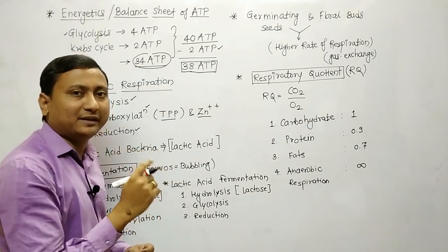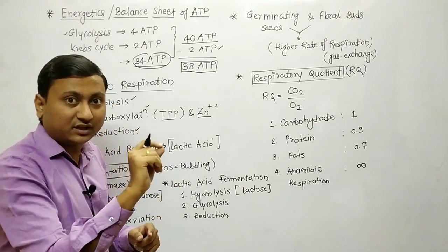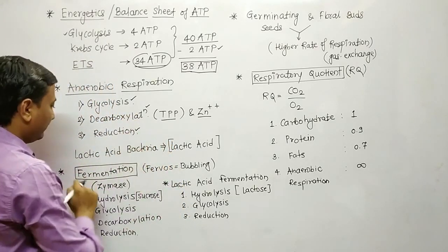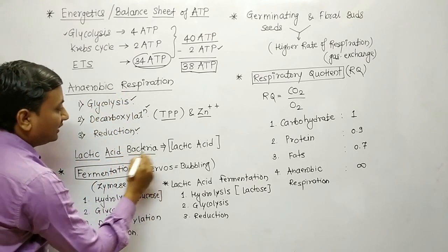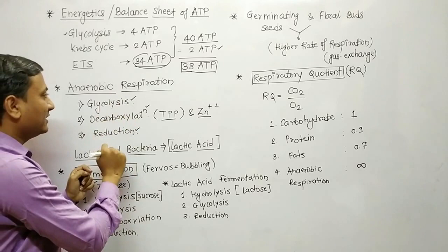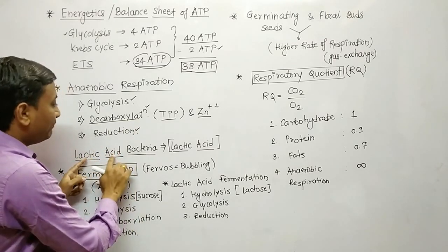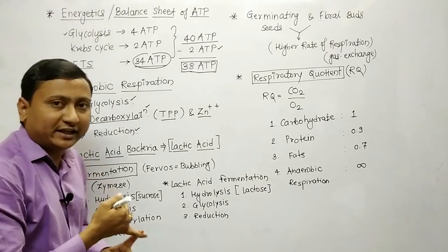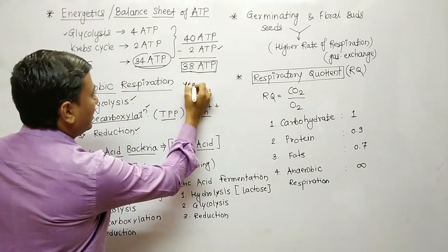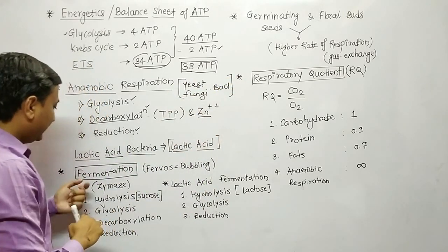In the decarboxylation step, the coenzyme used is TPP — thiamine pyrophosphate — and the cofactor is Zn++ (zinc). For lactic acid bacteria, the steps change: anaerobic respiration in lactic acid bacteria involves glycolysis followed directly by reduction — decarboxylation is absent. Anaerobic respiration with ethanol as end product occurs in yeast, some fungi, and some bacteria.